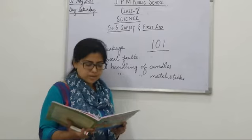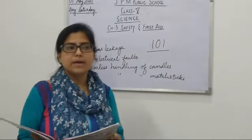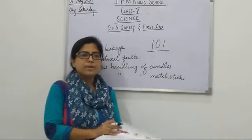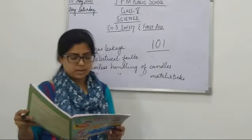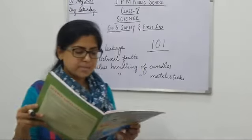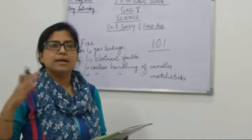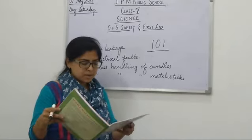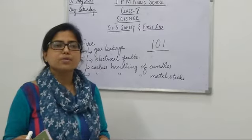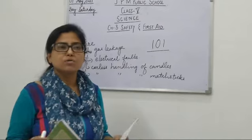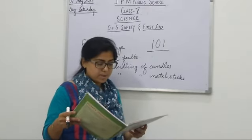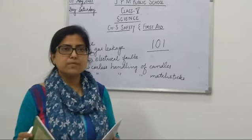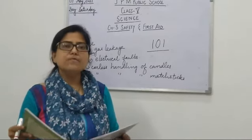Fire extinguishers are machines which are used to stop the fire. As you can see in your book, these are the fire extinguishers. In case of electrical fire, switch off the mains immediately. Do not use water to put out electrical fire. Use sand, mud, and a fire extinguisher to put out electrical fire.